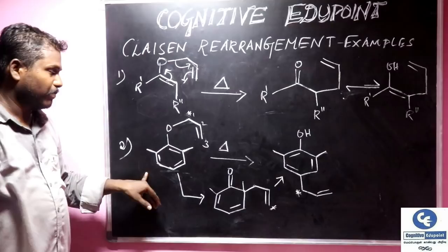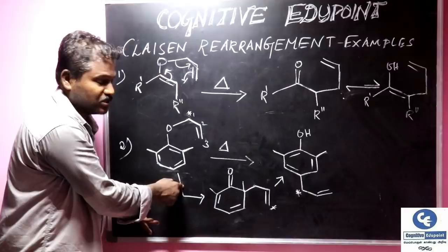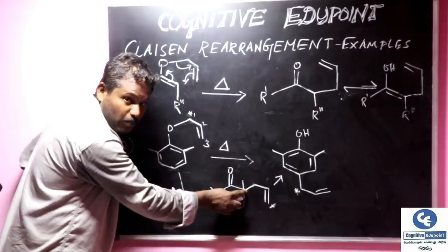Second example. If we have an ortho-substituted phenyl, phenyl allyl ethers, the rearrangement will still take place but the substitution will go to the para position. Initially in first step, third carbon will rearrange to third carbon.